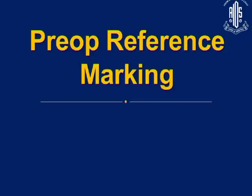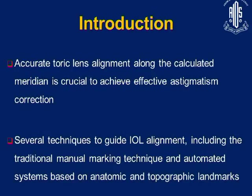My second topic is pre-op reference marking. For accurate toric lens alignment along the calculated meridian, it is crucial to achieve effective astigmatic correction, because with one degree of rotation it will cause around 3.5% loss of correction. There are several techniques for toric IOL reference marking, including manual toric marking and automated systems based on anatomic and topographic landmarks.